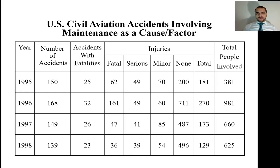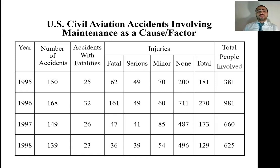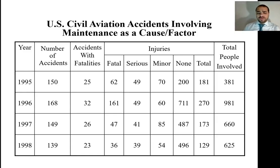Finally, this graph from the book shows aviation accidents primarily involving maintenance as the cause, over four years from 1995 to 1998. In 1995 there were 150 accidents, it increased slightly in 1996, then started decreasing — 150, 149, 130. This large number, only from the aviation industry, shows us the effects and criticality of maintenance for systems. Thank you — if you have any questions, please email me.